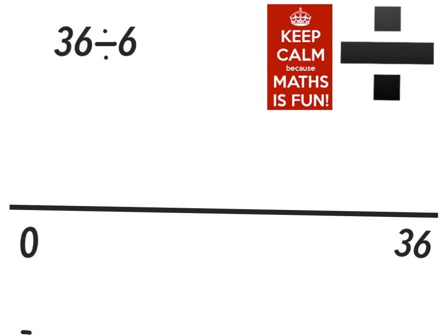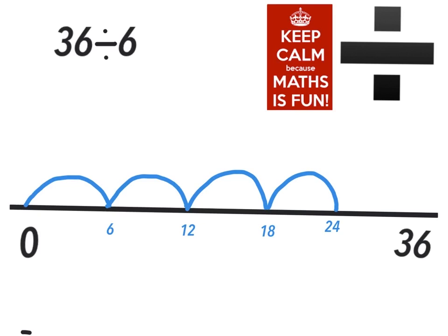Counting groups of the divisor on the number line until you reach the total: 12, 18, 24, 30, 36.